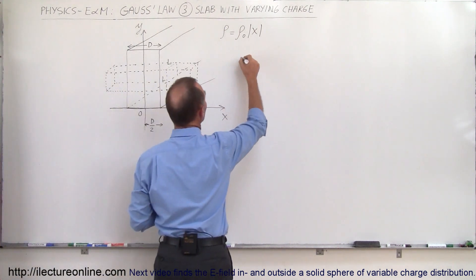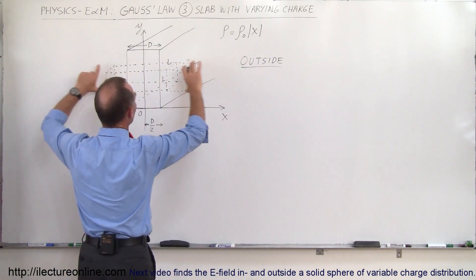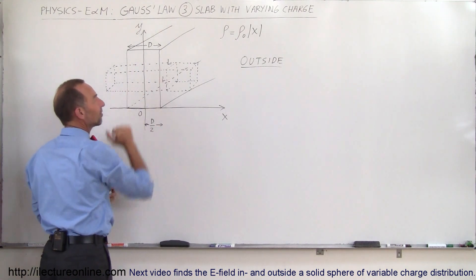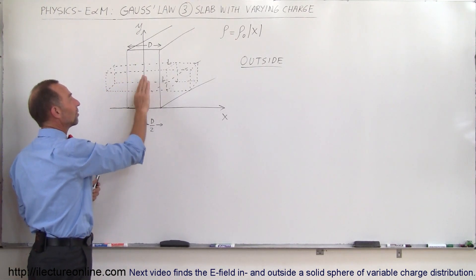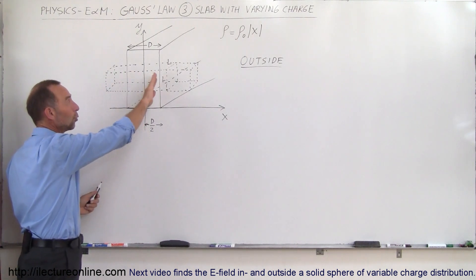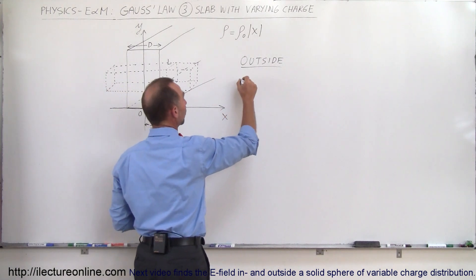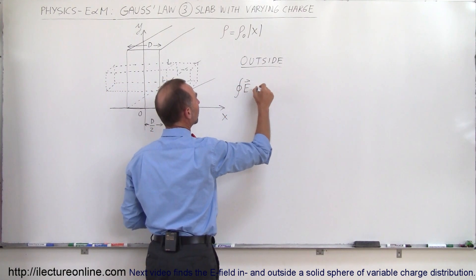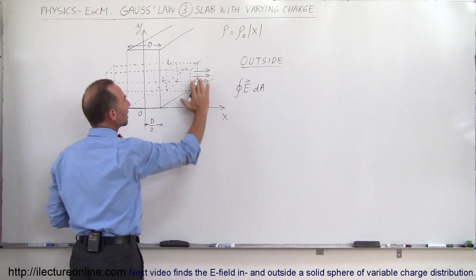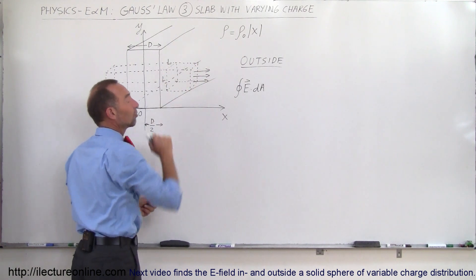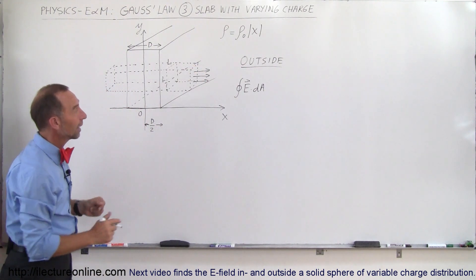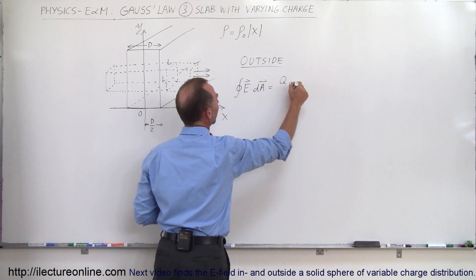We can imagine that the electric field at the center of the slab should be zero because there's no charge there, and it increases as you go to the edge. Let's start with the outside portion. I've drawn a Gaussian surface all the way through the slab, but we're only going to count the charge from the center of the slab to the outside. By symmetry, half the electric field is directed outward on one side and the other half on the other side, so we'll only do one side of the slab.